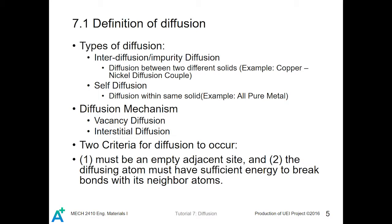In terms of the types of diffusion, there are two types. The first is interdiffusion, also called impurity diffusion, which describes diffusion between two different solids — for example, connecting copper and nickel plates to form a diffusion couple. The second type is self-diffusion, which is diffusion within the same solid. For example, even within a pure metal, atoms can move within the metal — that is self-diffusion.